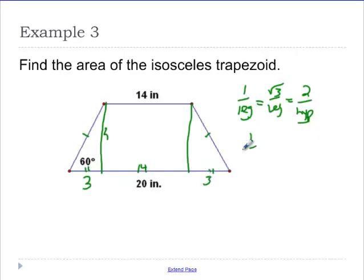So, now I have my first leg, 1 over 3, and square root of 3 over h. When you cross multiply, you get h is 3 square root of 3. Now that I have 3 square root of 3, I'm going to go into area. Area is base 1 plus base 2 over 2 times the height.